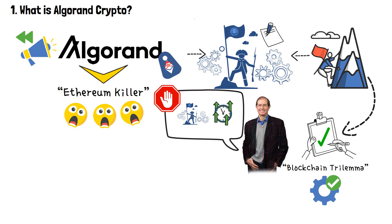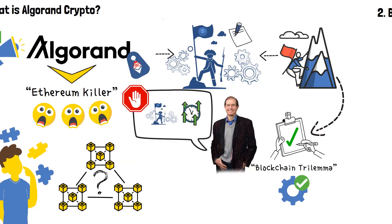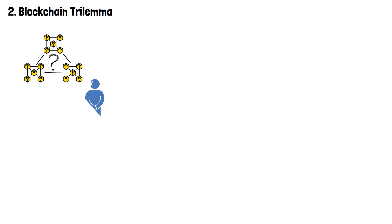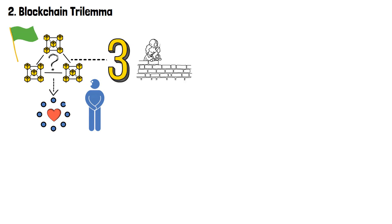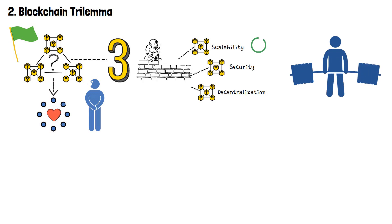Now, before I go on and elaborate on that further, you need to understand what blockchain trilemma even is. The blockchain trilemma is an intriguing concept that lies at the heart of decentralized technology. And in order to have Algorand explained, this chapter is crucial. It refers to the three fundamental properties that blockchain networks strive to achieve: scalability, security, and decentralization. The catch, however, is that it's immensely challenging to achieve all three of these properties simultaneously.